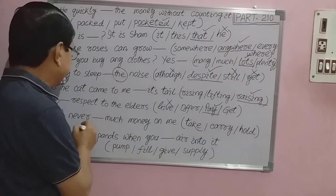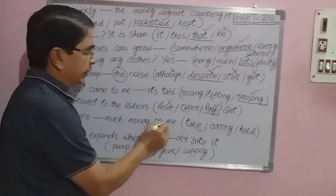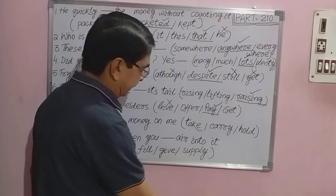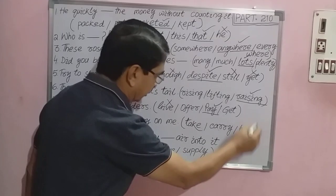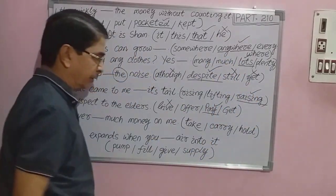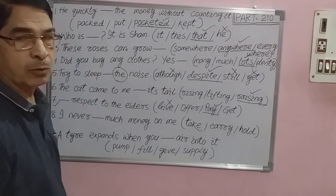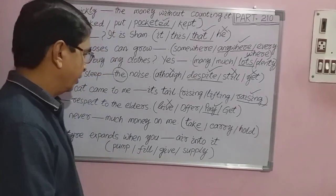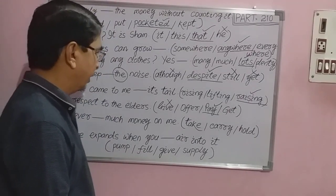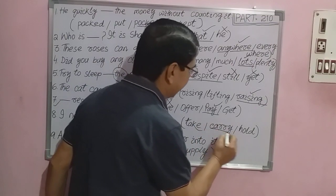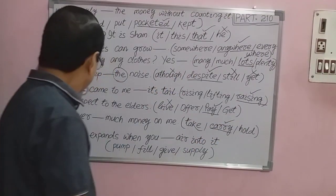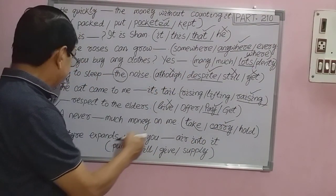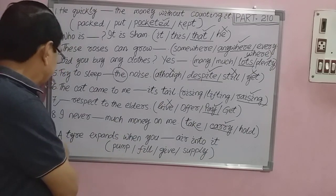Question number eight: 'I never ___ much money on me.' Options: A) take, B) carry, C) hold, D) keep. The correct one is 'carry' — I never carry much money on me.